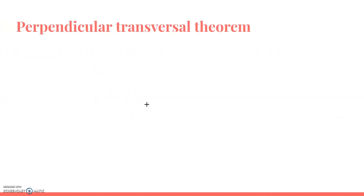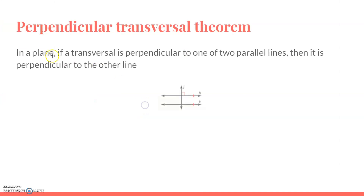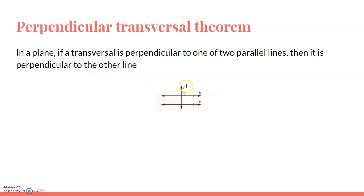The perpendicular transversal theorem: in a plane, if a transversal is perpendicular to one of two parallel lines, then it is perpendicular to the other line. As you can see here, lines H and K are parallel. Line J is perpendicular to line H. Since lines H and K are parallel, J is also going to be perpendicular with line K.